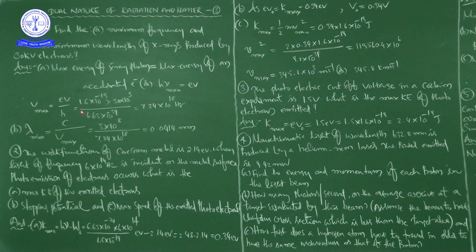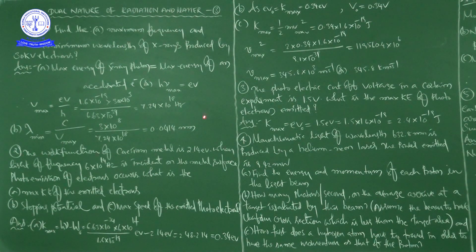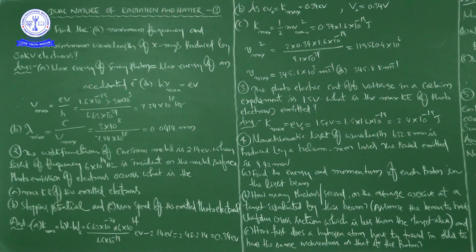Substituting values: 1.6×10⁻¹⁹ × 30×10³ divided by 6.63×10⁻³⁴. Doing the calculation gives us 7.24×10¹⁸ Hz. So the maximum frequency is 7.24×10¹⁸ Hz.